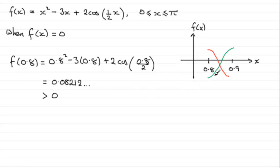If you do that on your calculator, what you should find is 0.08212 and so on, which is a positive value greater than 0. Clearly we haven't got this part of the green graph—we've got this value up here, a positive value when x is 0.8. So what I'm hoping for now is when I do f(0.9), I get a negative value.